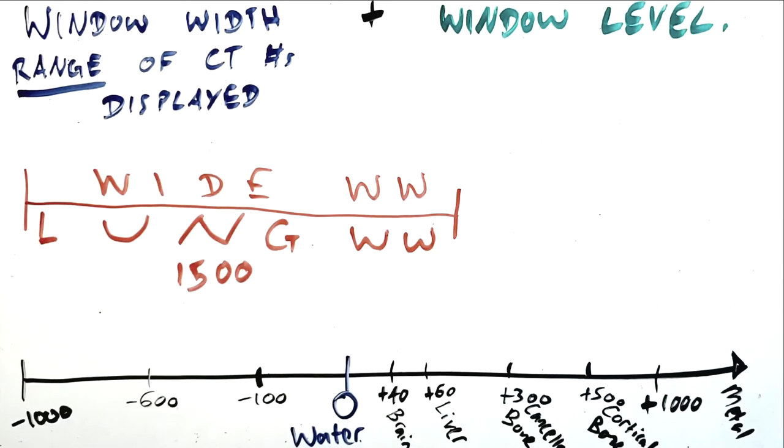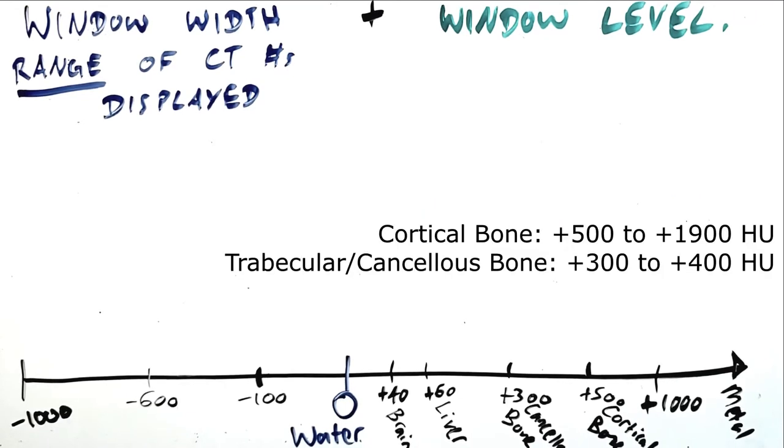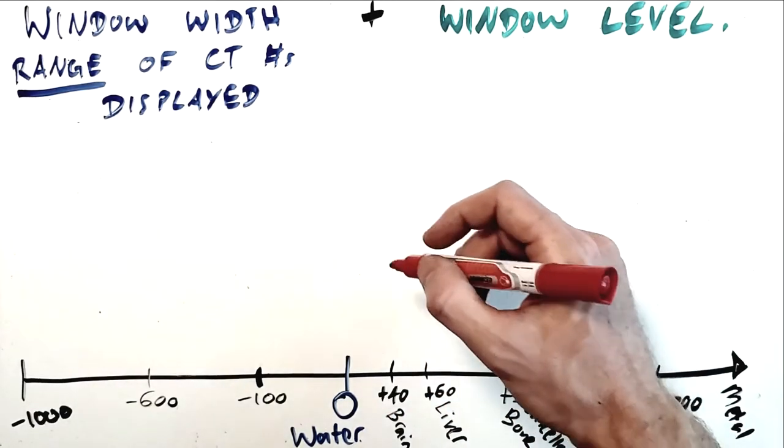Another example of this would be a bone window, where you would use a wide window width of around 1800 because there is a very large difference between the density of cortical and trabecular bone.